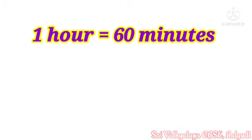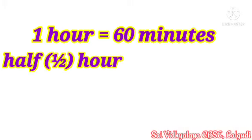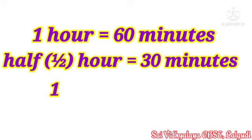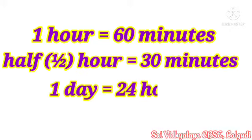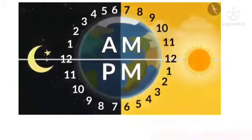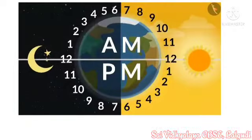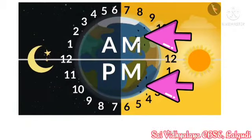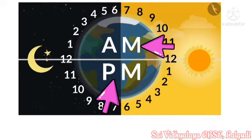One hour is equal to 60 minutes. Half an hour is equal to 30 minutes. One day is equal to 24 hours. Those 24 hours are divided into two parts. Each part is 12 hours long. These parts are called AM and PM.